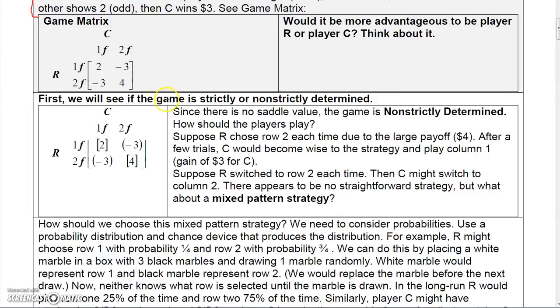First, let's see if the game is strictly or non-strictly determined. In the first row, the minimum is negative three for R. And second row, it's also negative three. For the columns, for C, the maximum would be two or four. Well, there's no overlap. So there's no saddle value. So therefore, this game is non-strictly determined.